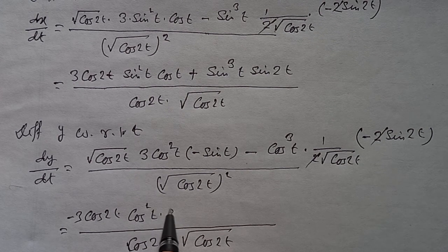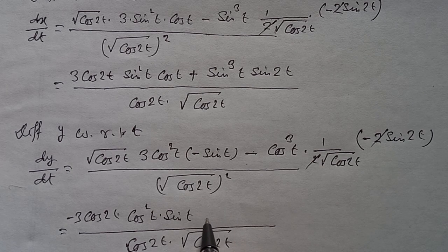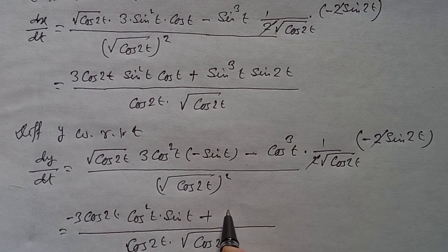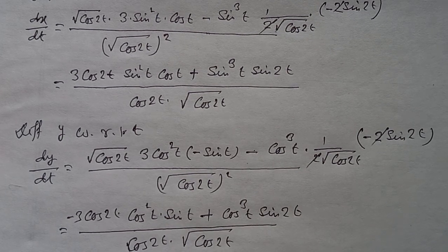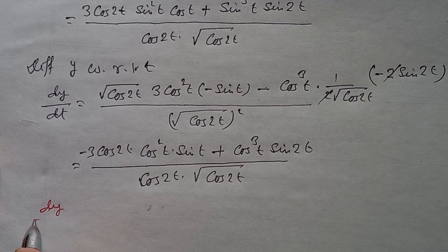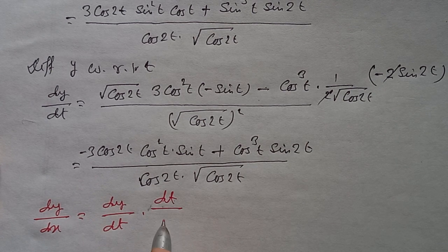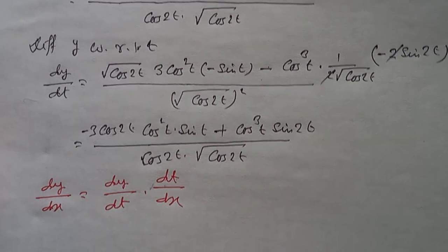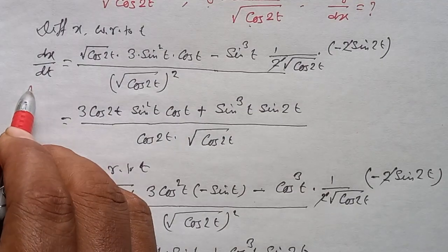This gives: cos 2t times minus 3 cos square t into sin t, plus cos cube t into sin 2t. Now, dy/dx equals dy/dt times dt/dx, i.e., dy/dt divided by dx/dt.